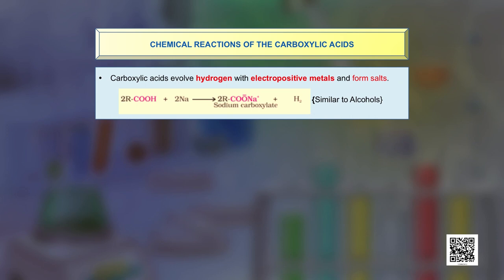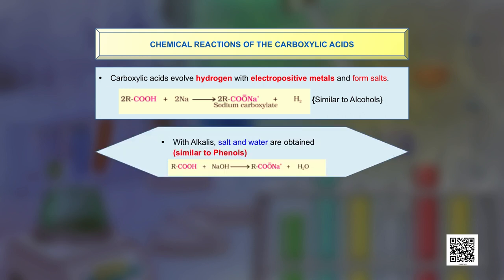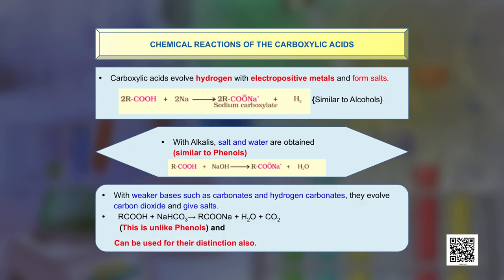Carboxylic acids evolve hydrogen with electropositive metals and form salts. For example, they react with sodium metal to give hydrogen gas and a carboxylate ion — similar to alcohols. With alkalis such as sodium hydroxide, salt and water are obtained, similar to phenols. With weaker bases such as carbonates and hydrogen carbonates, carboxylic acids evolve carbon dioxide and form salts.